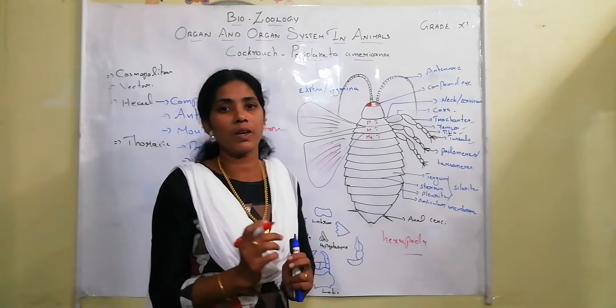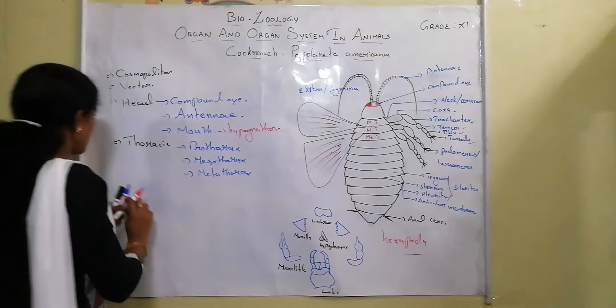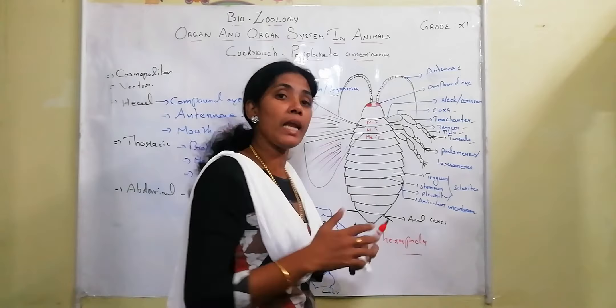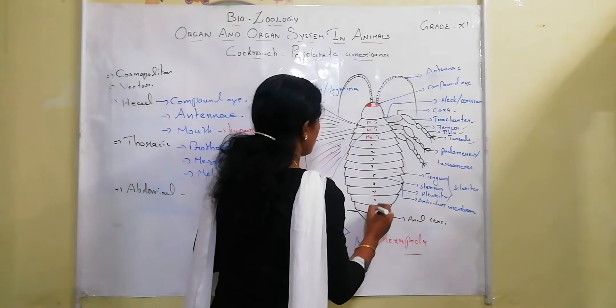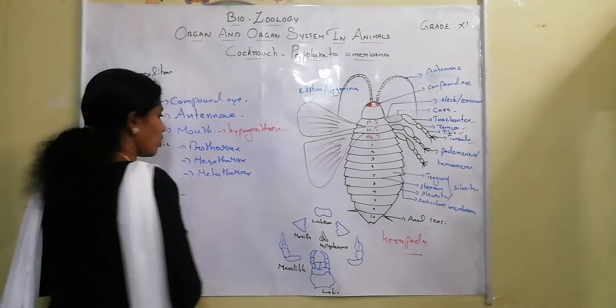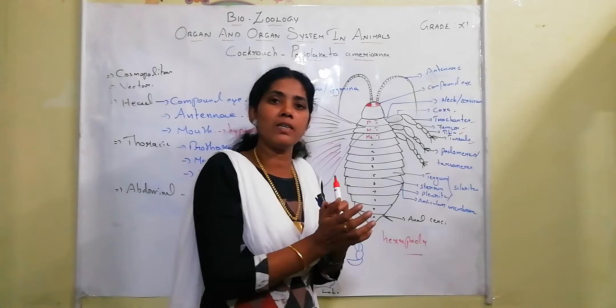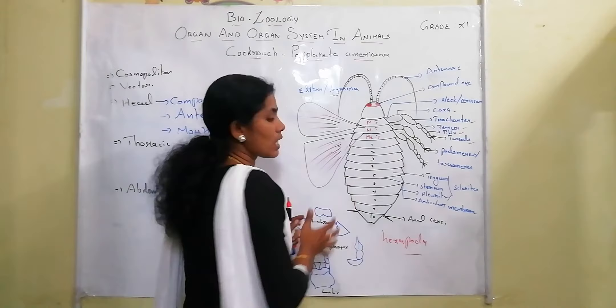The third body division is the abdominal region. For both male and female, the abdominal region consists of 10 segments. The segment count is the same, but the organs present inside differ between male and female.